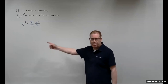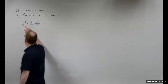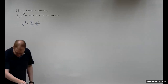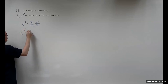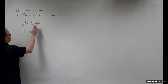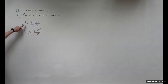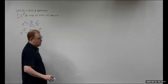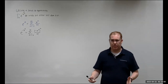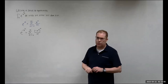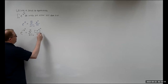Thankfully, we have a series for e to the x. What we can do is evaluate that series at minus x squared and go from there. So for e to the minus x squared, we replace x with minus x squared. Remember, the series for e to the x converges for all x — the domain is infinite — so this substitution also converges for all x.